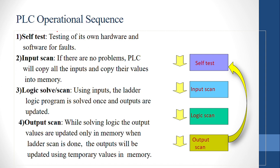In the logic scan, the input values are processed and the program runs on the processor. Then comes the output scan — the results from the logic scan are updated in the output scan. This is a continuous cycle: it refreshes and repeats the self-test again. This is the PLC operational sequence.